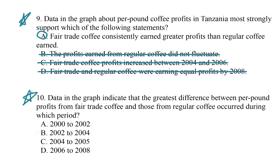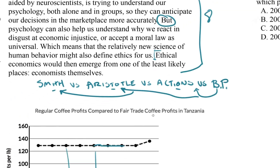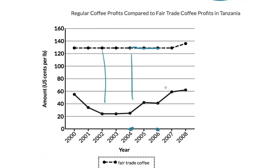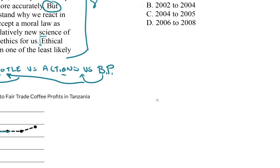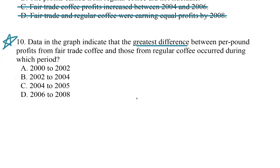All I did there was look at the graph and figure out the story the data were telling, then knocked out choices that conflicted with it. Let's move on to question 10, which asks about the greatest difference between per pound profits from fair trade and regular coffee. During our question survey phase I already marked this period — it seems to fall between 2002 and 2004, because that's when the distance between the two lines is the greatest. Let's see if 2002 to 2004 is an option.